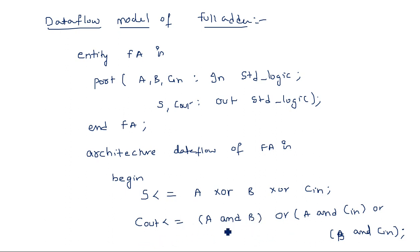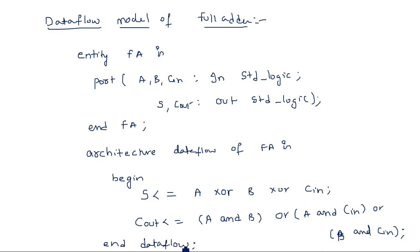Inside the architecture, write the concurrent statements: 'Sum <= A xor B xor C_in;' and 'C_out <= (A and B) or (A and C_in) or (B and C_in);'. Just two simple lines are sufficient, instead of the multiple if-else statements needed in behavioral model. Close with 'end data_flow;'. This is how to write a VHDL program for any logical circuit using the data flow model — simply writing the output equations using predefined operators.